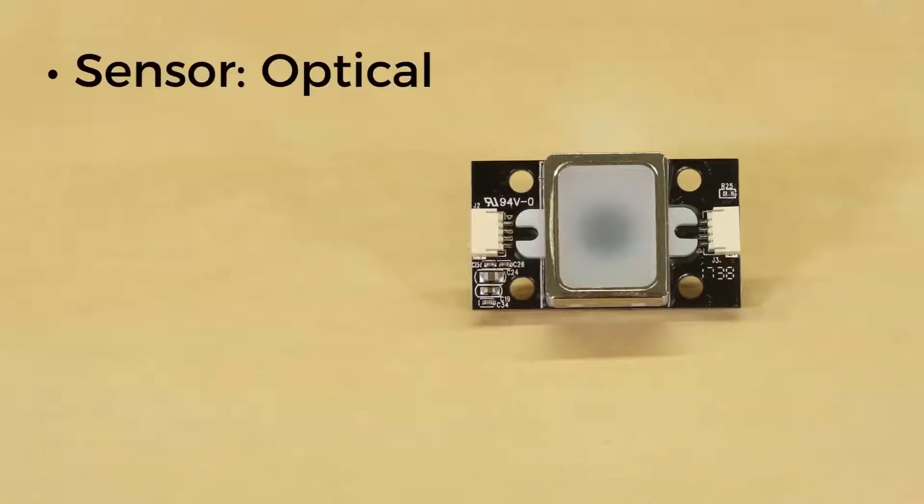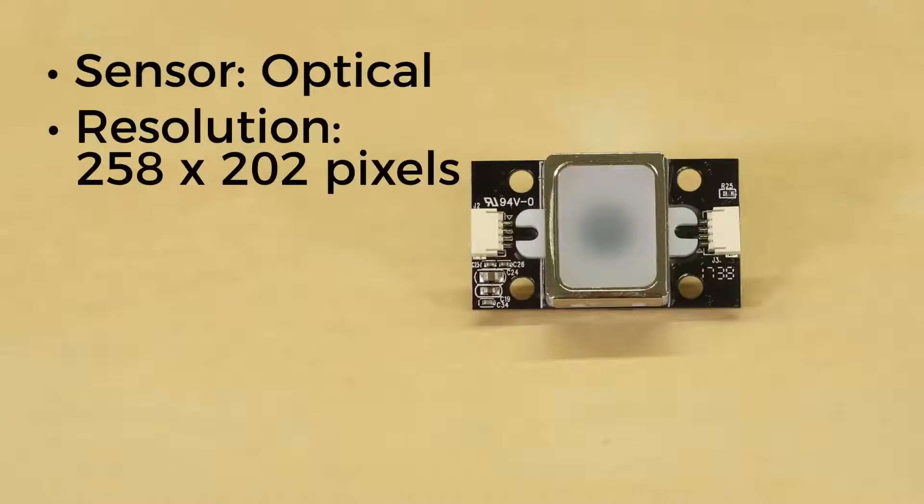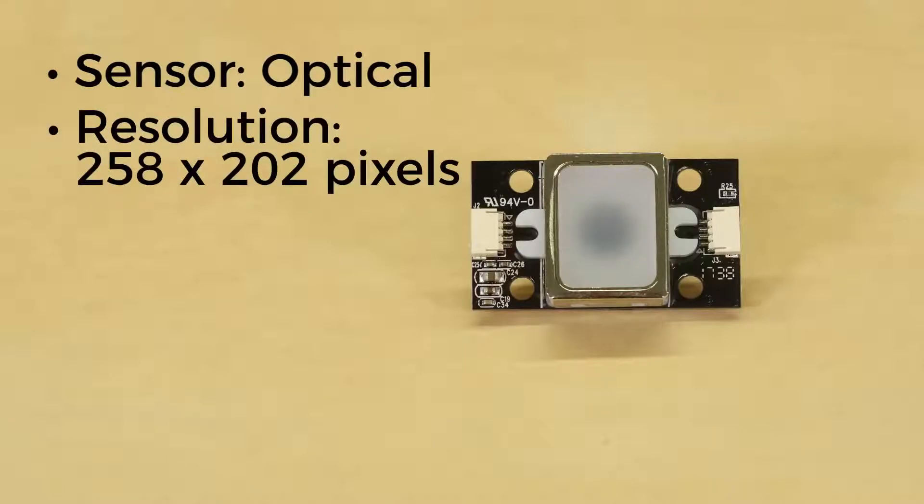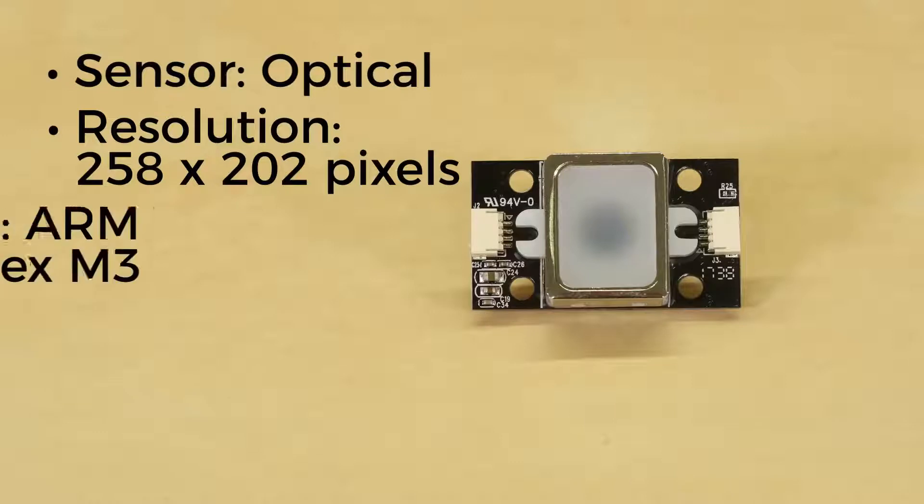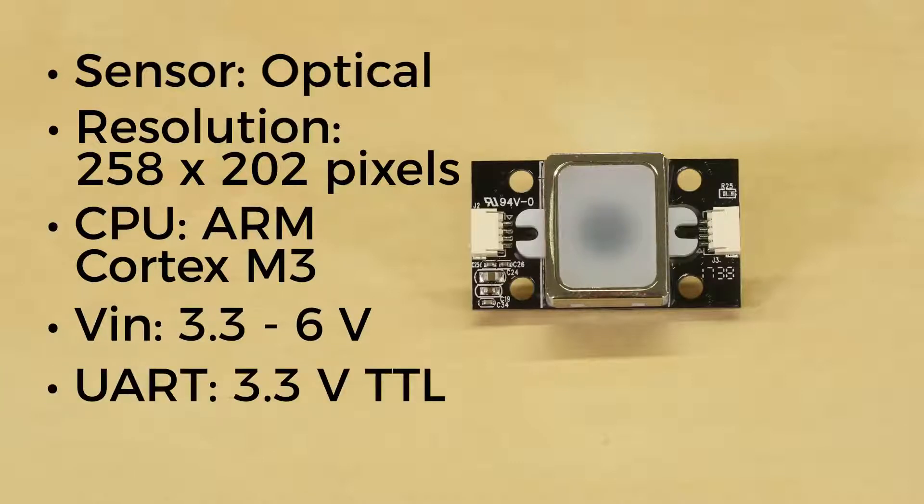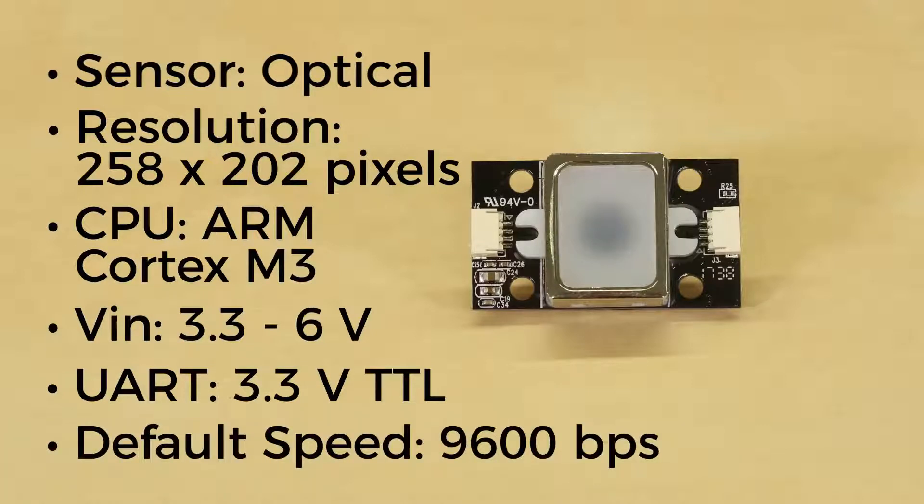The scanner uses an optical sensor with a 258x202 resolution to take a picture of your fingerprint and an ARM Cortex-M3 to analyze it. It can be powered with 3.3 to 6 volts, but note that it uses 3.3 volt logic over UART to communicate. By default, the UART speed is set to 9600 bits per second.